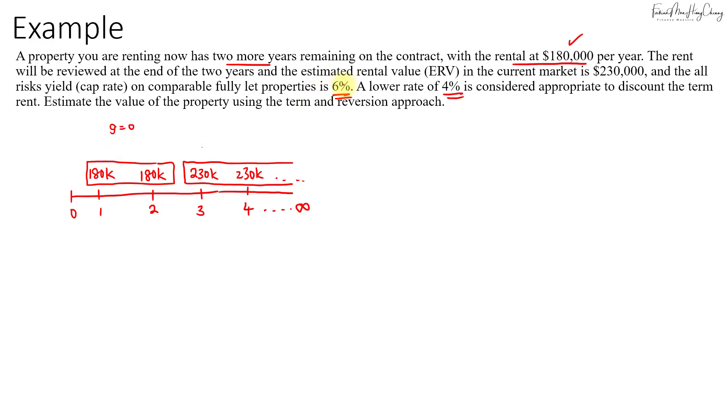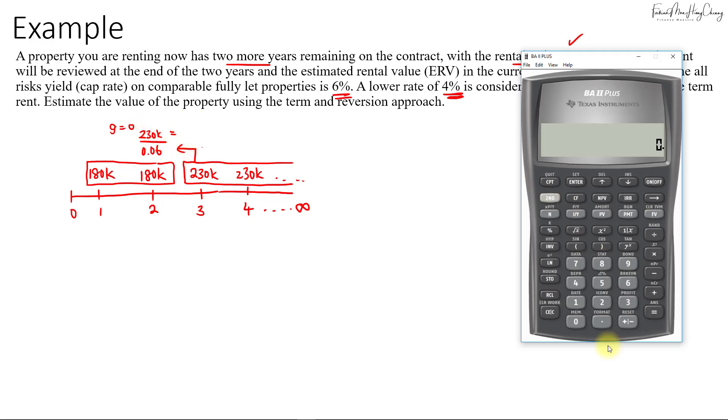In this case, the discount rate for this will be 4%, which is also the cap rate. First of all, we need to discount this $230,000 back into year 2. We'll take $230,000 divided by 6%, which is the cap rate for this type of property. That will be equal to $230,000 divided by 0.06. It's about $3.833 million.